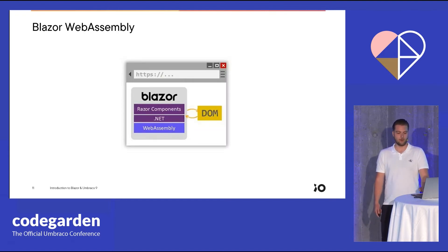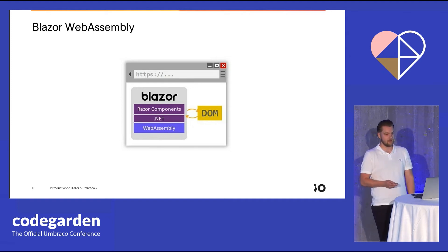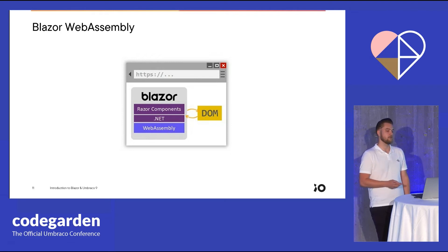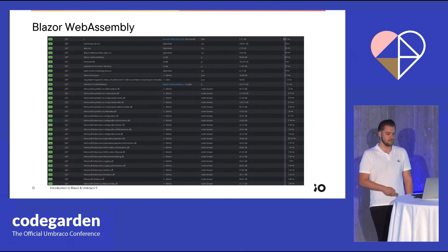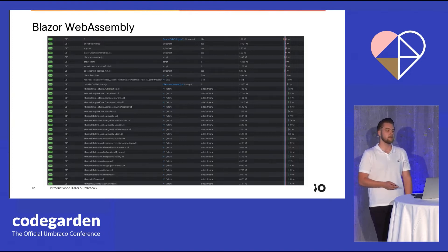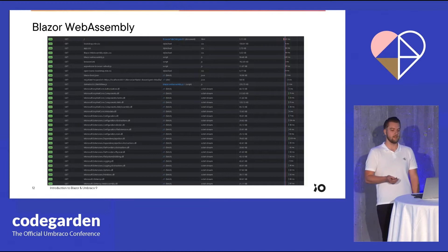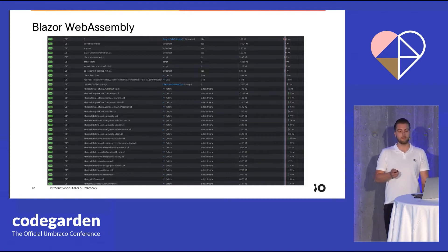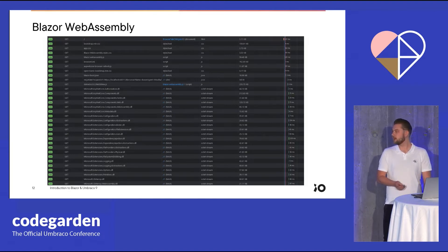The second version of Blazor, and perhaps the most notable one of the two, would be Blazor WebAssembly. With Blazor WebAssembly, our entire application is executed directly in our browser using WebAssembly, instead of requiring an active server connection. Any updates or interactions that take place within our browser get processed and updated locally using WebAssembly. When we load our WebAssembly application into our browser, we can see there are quite a large amount of files being transferred compared to the server-side variant.